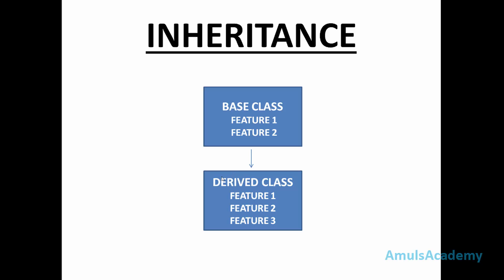Here we can see a base class that contains feature 1 and feature 2. This is our newly derived class and it contains feature 1 and feature 2 that belong to the base class, as well as feature 3. That means the newly created class can contain properties belonging to the base class as well as new methods of its own.